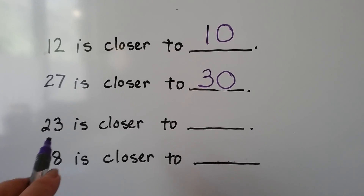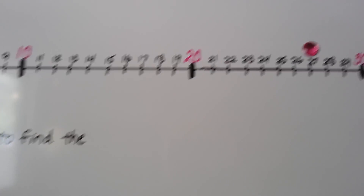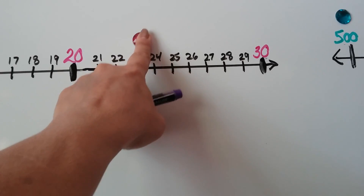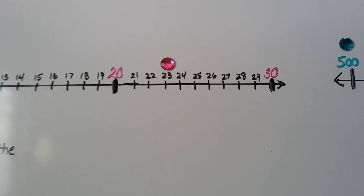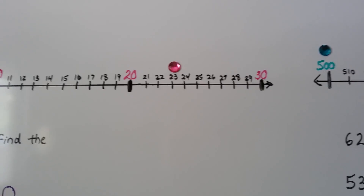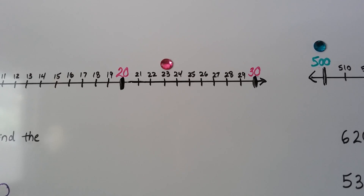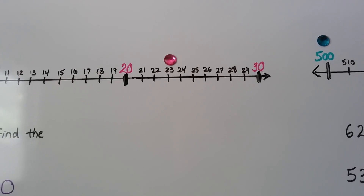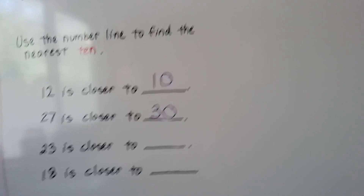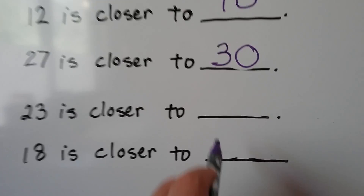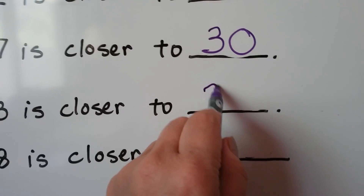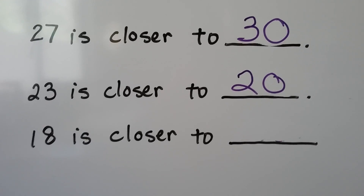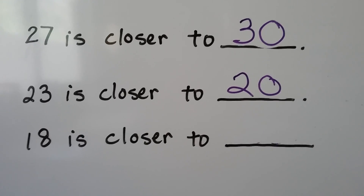Let's try 23. We find 23 and move our jewel there. It's in between the 20 and the 30. Is it closer to the 20 or the 30? It's closer to the 20, so 23 is going to round to 20 if we round it to the nearest 10.